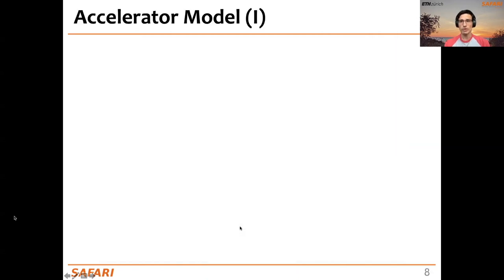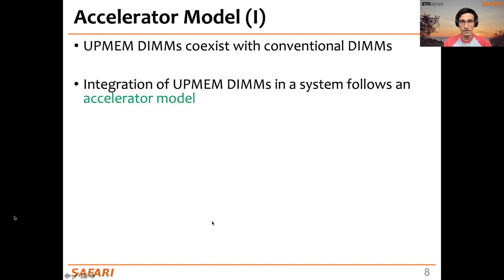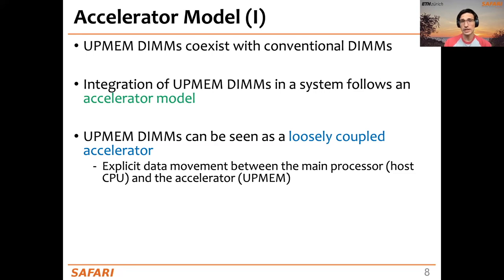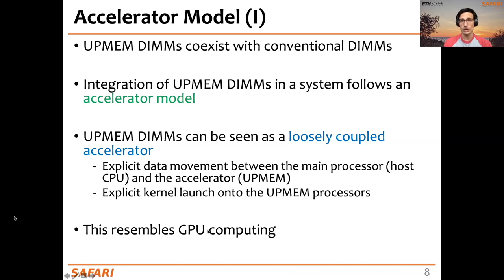Let's start talking about how to program this processing-in-memory system. In the UPMEM-based PIM system, we follow the accelerator model, where UPMEM DIMMs coexist with conventional DIMMs, and the integration of the UPMEM DIMMs into the system is seen as a loosely coupled accelerator. That means we have to explicitly move data between the host processor and the accelerator, the UPMEM DIMMs, and also explicitly launch a kernel onto the UPMEM processors, the DPUs. This resembles GPU computing.